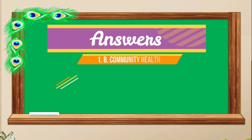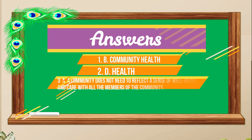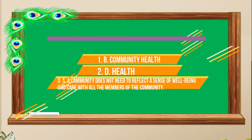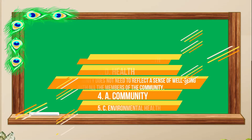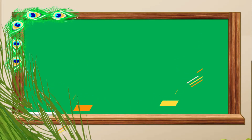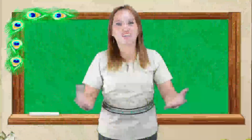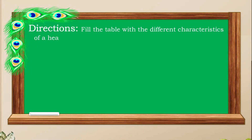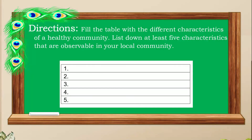Here are the answers: Number 1 — B. Community health. Number 2 — D. Health. Number 3 — A. A community does not need to reflect a sense of well-being and care with all the members of the community. Number 4 — A. Community. Number 5 — C. Environmental health. If you got all items correctly, congratulations! Good job! For your assignment, fill in the table with different characteristics of a healthy community. Please list at least five characteristics that are observable in your local community.